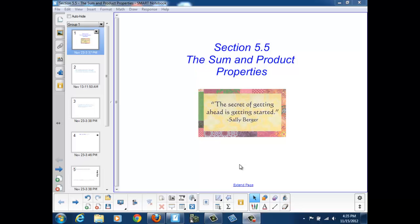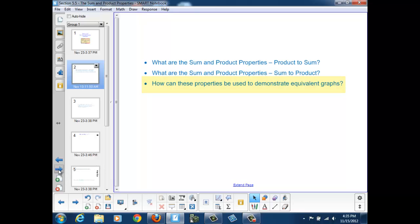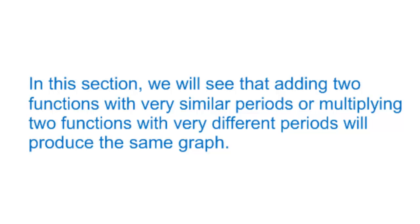Welcome to Section 5.5: The Sum and Product Properties. At the end of this section, we should be able to answer these questions: What are the sum and product properties? Converting products of two sinusoids to the sum of two sinusoids, converting the sum of two sinusoids to the product of two sinusoids, and how these properties can be used to demonstrate equivalent graphs. We'll see that adding two functions with very similar periods or multiplying two functions with very different periods will produce the same graph.